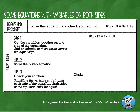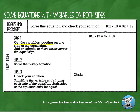Let's go through our steps. First, when we have variables on both sides, we want to get those variables together on one side. To do that, we add or subtract to move terms across the equal sign. We can't just say 10x plus 6x is 16x because they're not on the same side. It's a matter of canceling one out — we can either move the 10x to the right or the 6x to the left.